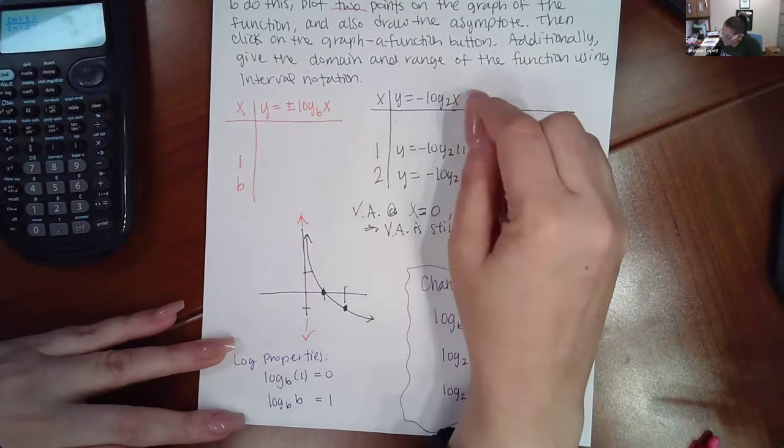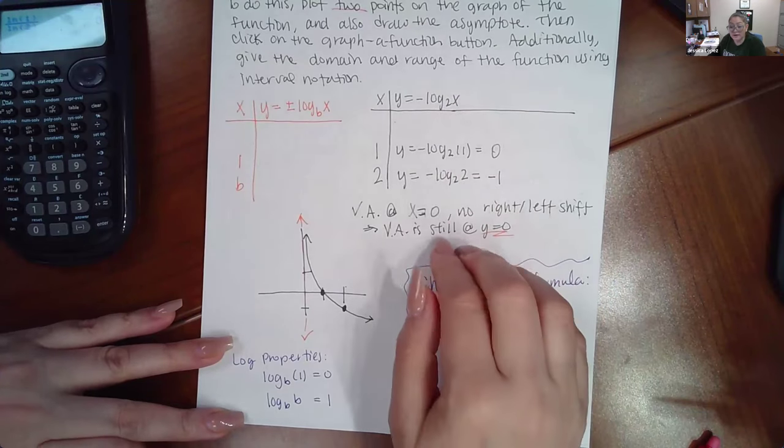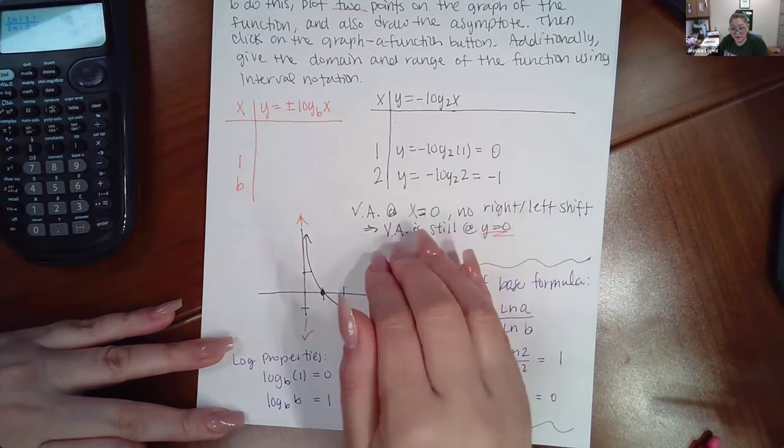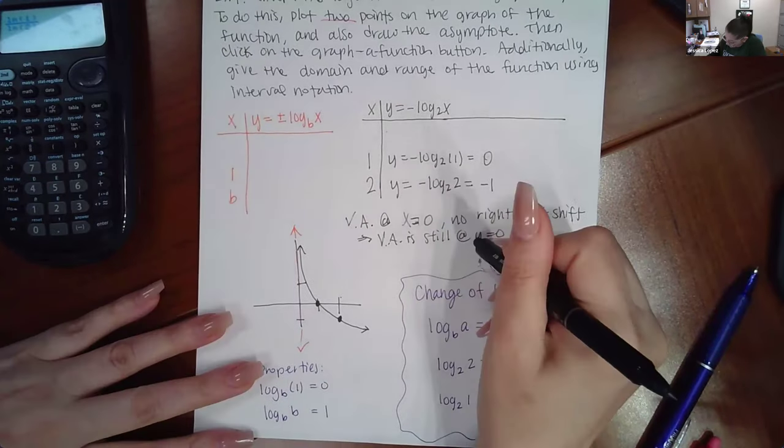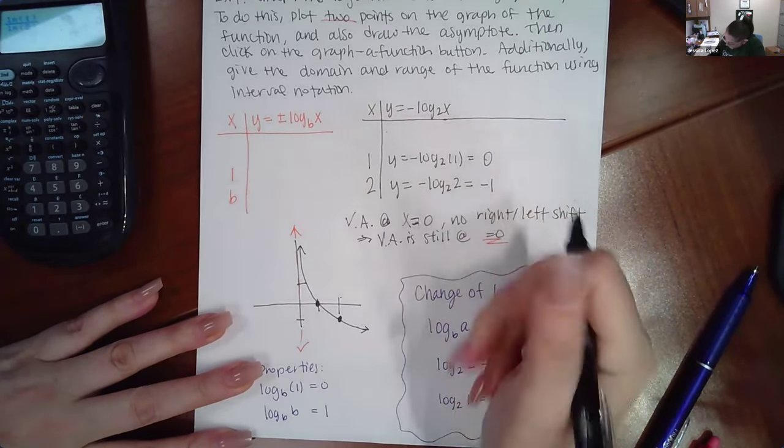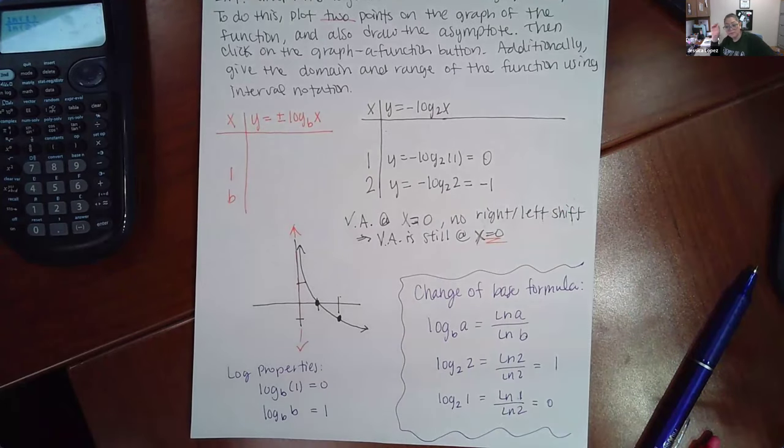But since you don't have anything being added or subtracted inside the argument, the vertical asymptote is not shifting left or right. So it's going to stay at x equals zero, not y equals zero. X equals zero.